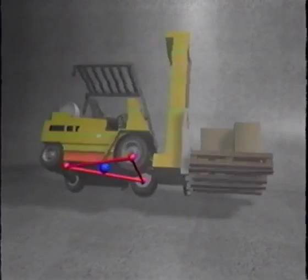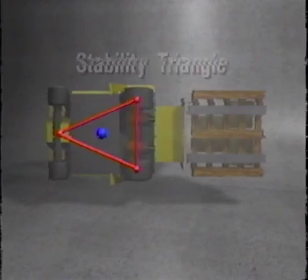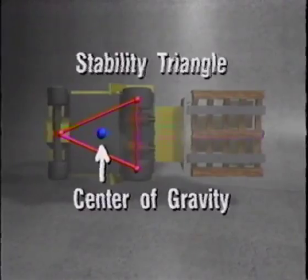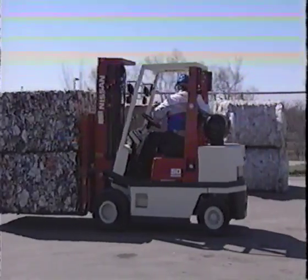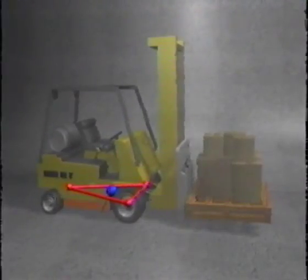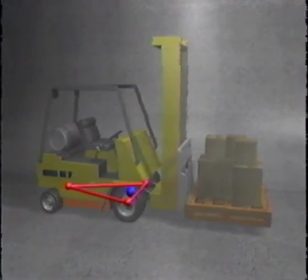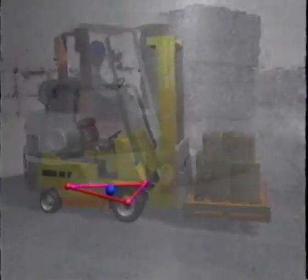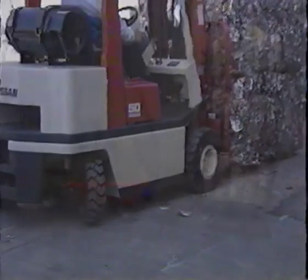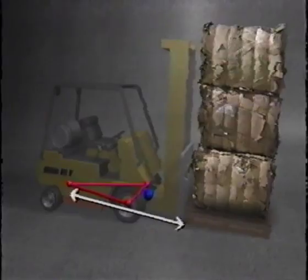The forklift is suspended on three fixed points — two on the fixed front axle and the center point of the rear. This makes up the stability triangle. The blue dot represents the center of gravity. When weight is added to the forks, the center of gravity moves forward. When the forks are tilted back slightly, the center of gravity moves back. If the weight is too heavy or the forks are tilted forward, the center of gravity could move outside the stability triangle and cause the truck and yourself to tip.